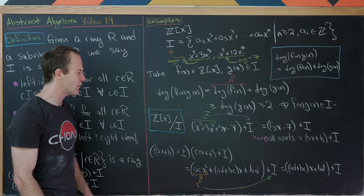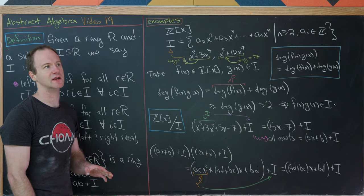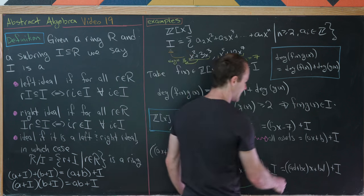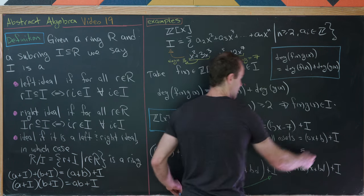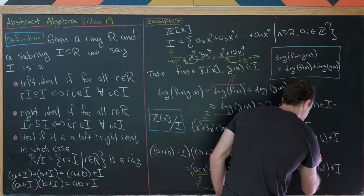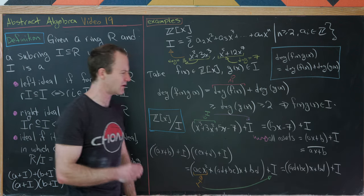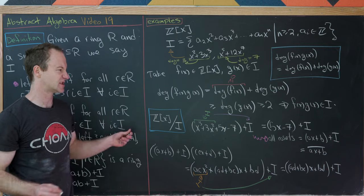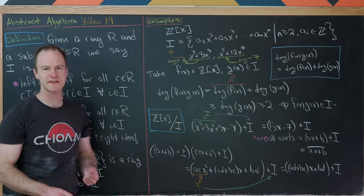As a notational shorthand, we sometimes write the coset ax+b+I simply as ax+b with an overline (read 'ax+b bar'), indicating we've passed to the quotient ring.